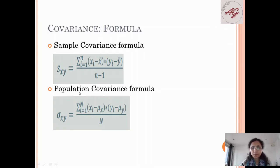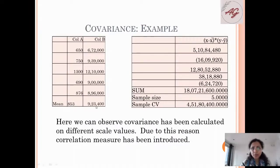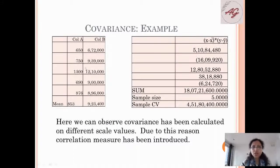For sample and population calculation we have different formulas. Let us look at the example: I have column A data and column B data. I'm calculating this formula — first getting all the data points, then getting the summation. I have already calculated the mean value for column A and column B. The sample size is 5. The sample covariance is calculated accordingly. We can observe covariance values are on different scales — in the range of 650 to 1300 versus a different range for the other column.